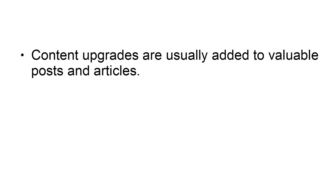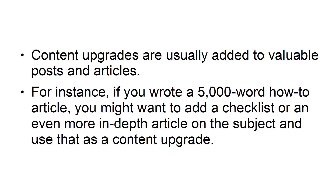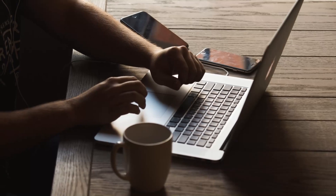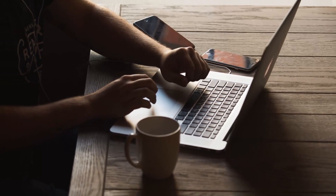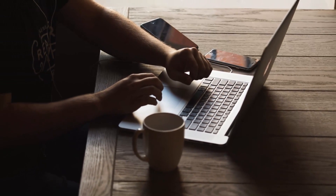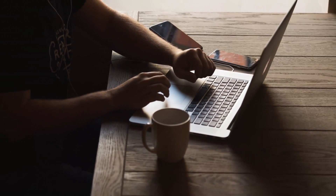2. Offer Content Upgrades. Content upgrades are usually added to value posts and articles. For instance, if you wrote a 5,000-word how-to article, you might want to add a checklist or even a more in-depth article on the subject, and use that as a content upgrade. If people want to download the checklist or an in-depth article, they'd have to use their email address to unlock it.